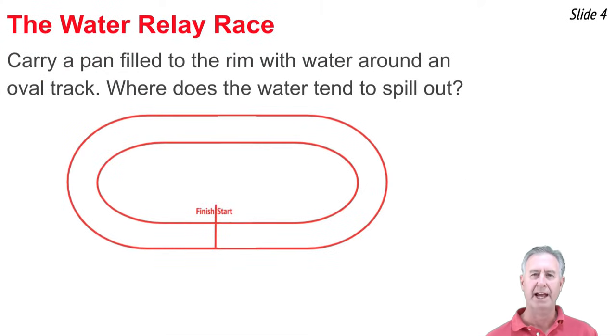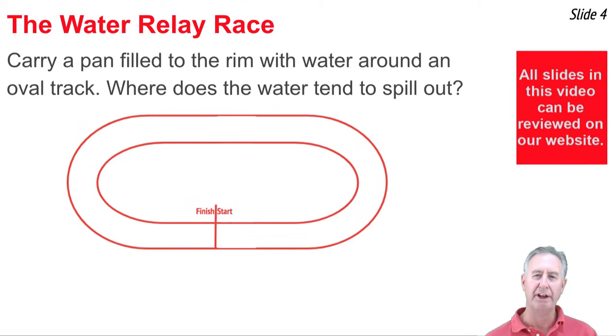This is a common classroom activity. It's called a water relay race. What you do is you fill a pan to the rim with water, and you have students race around an oval track, paying attention to where they lose the water. You could probably do it yourself if you wanted to. You pause the video, get a pan full of water, go outside, make yourself an oval track, and race around it. Make sure you do it far from traffic and downed power lines and angry pit bulls, and you'll be okay.